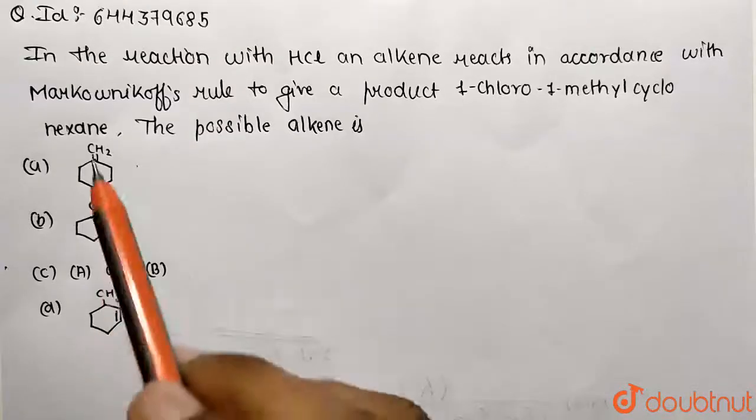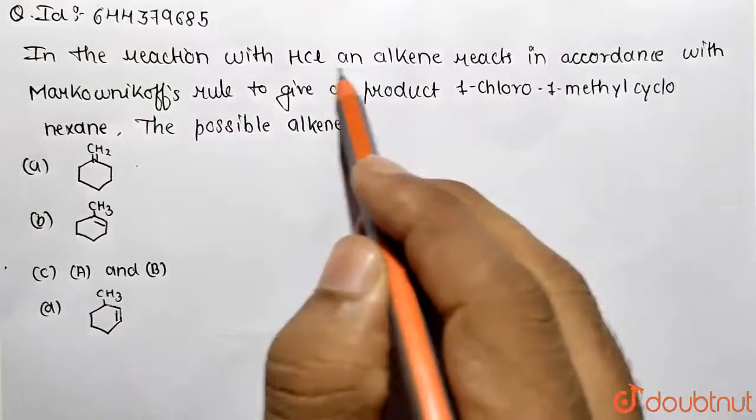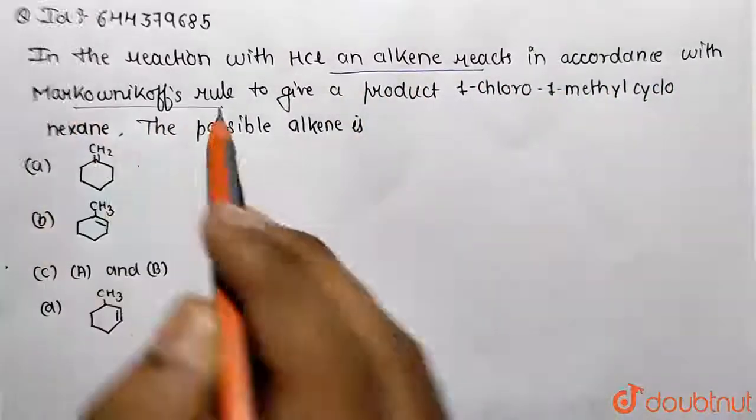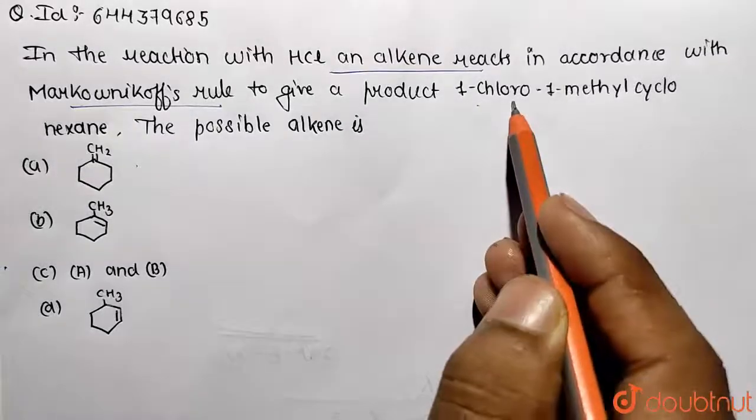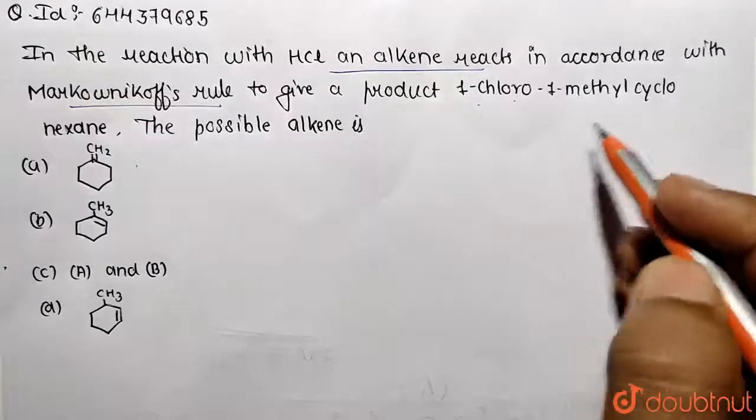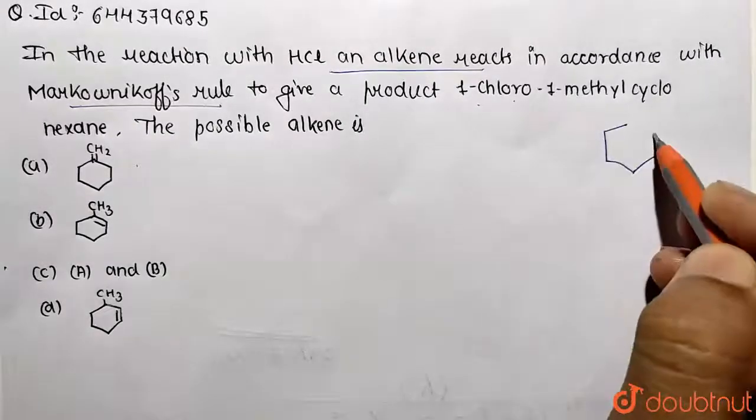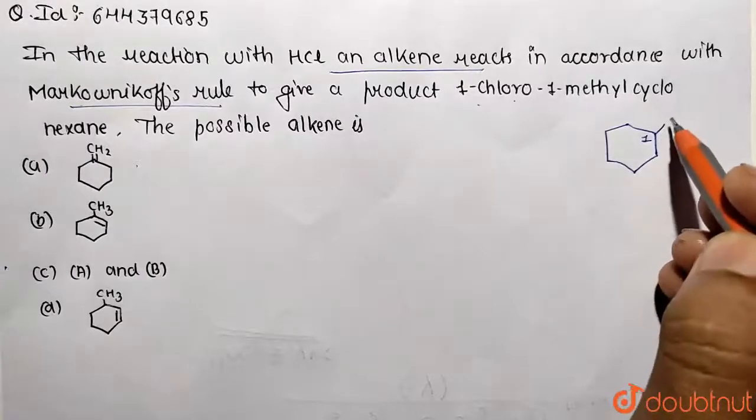We need to identify the reaction where HCl and an alkene react according to Markovnikov's rule to give a product 1-chloro-1-methyl cyclohexane. The product formed should be this cyclohexane containing at the first carbon both chloro as well as the methyl group attached.